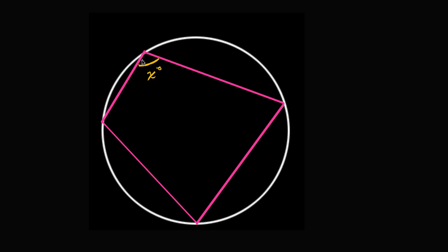This angle with measure x degrees intercepts an arc — one side of the angle intersects the circle there, the other side right over there. The arc it intercepts is highlighted in yellow. We've already learned that the relationship between an inscribed angle and the arc it intercepts is that the inscribed angle is half the measure of the arc. So if this angle measures x degrees, then the measure of this arc is going to be 2x degrees.